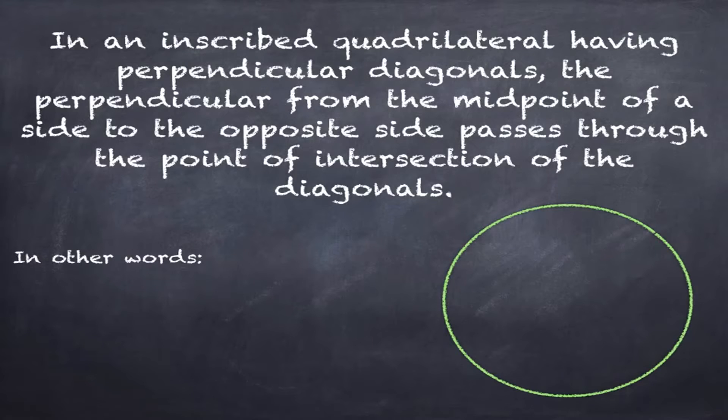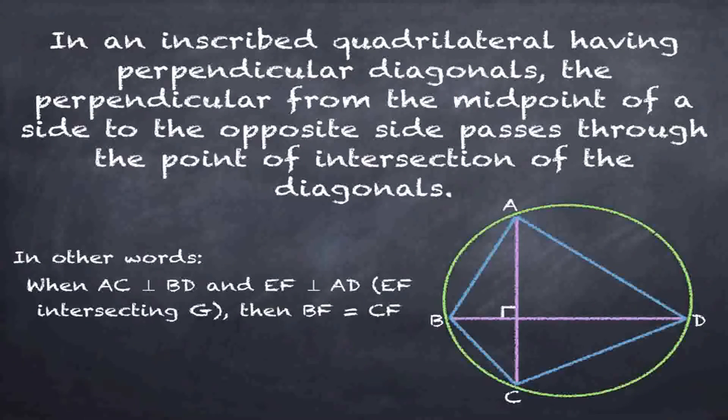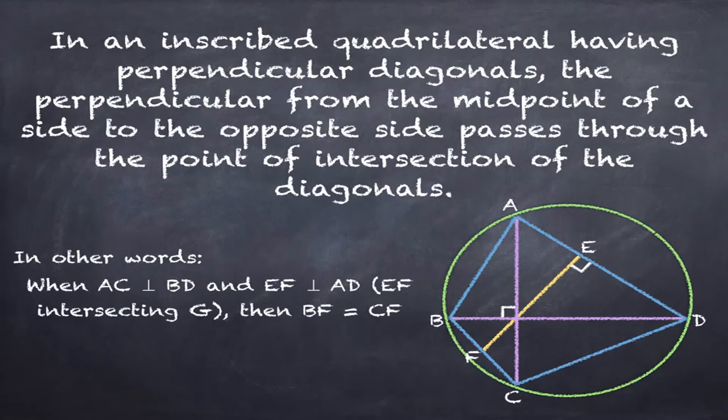Let's look at our circle with inscribed quadrilateral ABCD. When line AC is perpendicular to line BD and line EF is perpendicular to line AD, where EF intersects at point G.